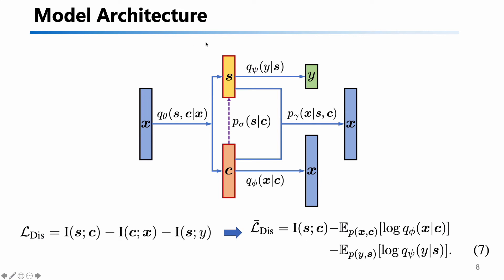This is the model architecture. We have three different items. This is the encoder — we feed x into the encoder and get the s and c embeddings. For the first item, we use this network to push s away from c. For s, we use a generative module to let s generate the style y, and we calculate the loss with the ground truth and back-propagate. For c (the content), we train another network to generate x from c and calculate the loss between the output and the ground truth.